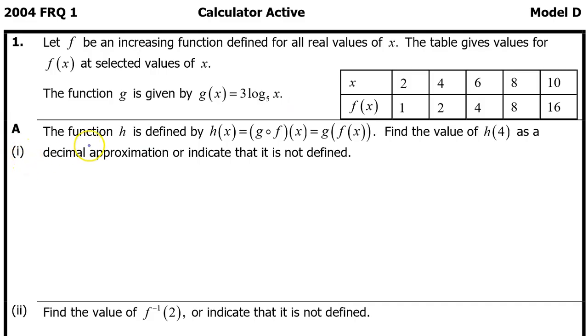Part A1: The function h is defined by h of x equals g of f of x, which means exactly the same thing as this notation. Find the value of h at 4 as a decimal approximation or indicate that it is not defined.